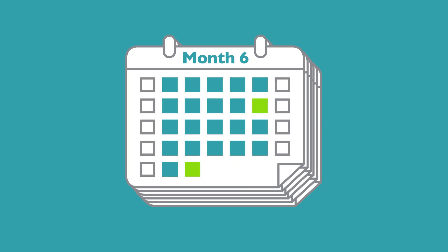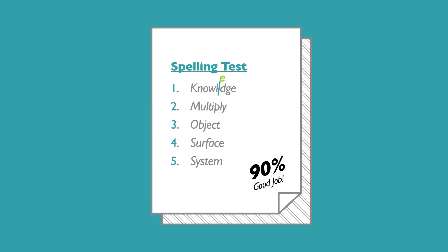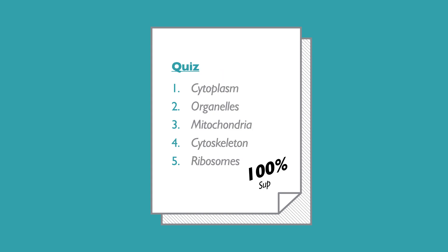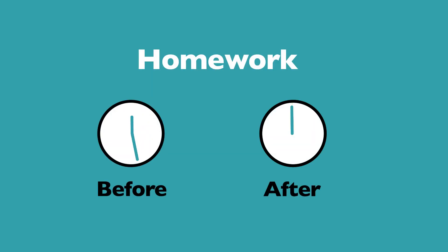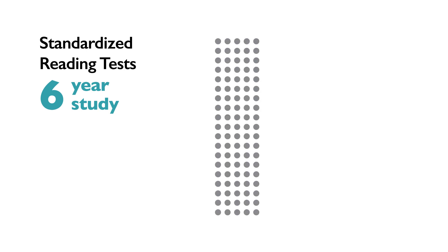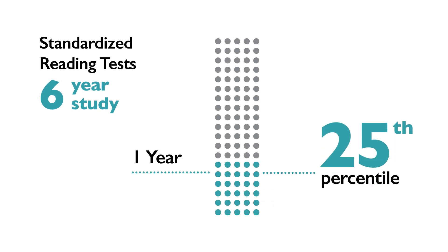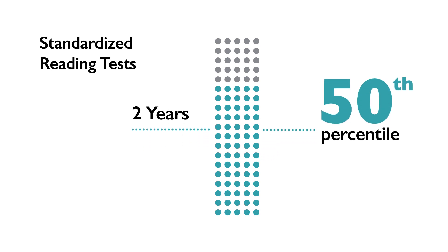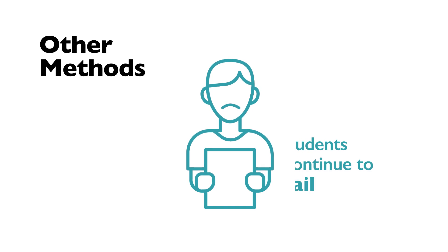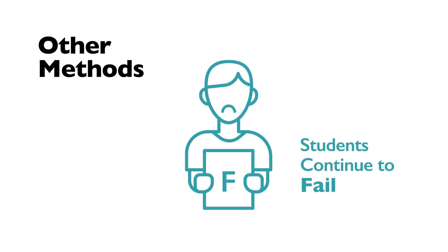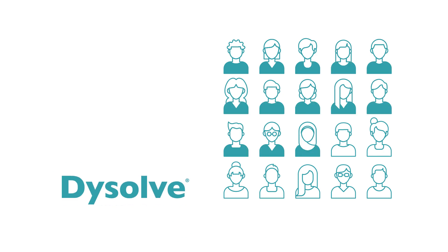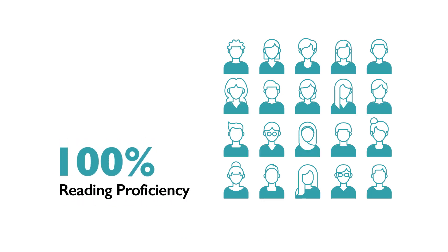Generally, within the first six months, failing students often see improvements first in spelling and greater ease in prepping for tests. Homework also gets easier and takes less time. The child seems happier. In a six-year study, all Dissolve graduates advanced above the 25th percentile in standardized reading tests in one year. More than three-quarters advanced above the 50th percentile in two years. With other methods, failing students continue to fail year after year. All students who completed the Dissolve program reached reading proficiency.